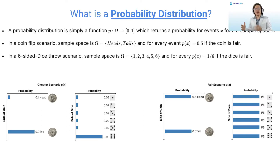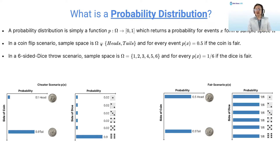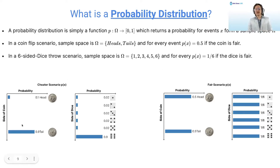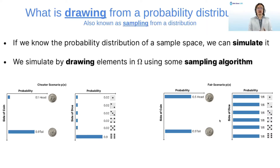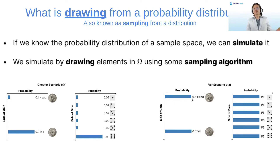A probability distribution is a simple function which maps elements from its sample space to probabilities. A simple example is a coin flip scenario, where the sample space Omega is heads and tails, and for every x we assign a probability of 0.5. For a six-sided dice, analogously, we have six sides. Drawing from a probability distribution simply means we use an algorithm to simulate what the probability distribution itself is modeling. We will be learning about a few of these algorithms.